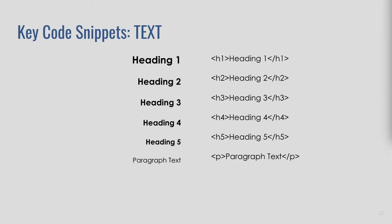The next thing I'm going to talk about is some key code snippets. In the body, when we want to display text, there are a couple of different types. We have a few different levels of headings — I'm sticking with just five because I can't imagine you'd need more than that — and then we have our paragraph text.